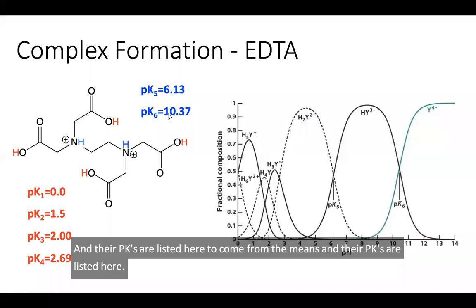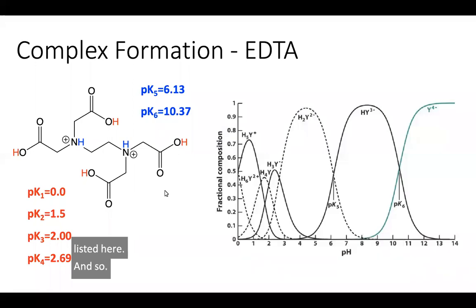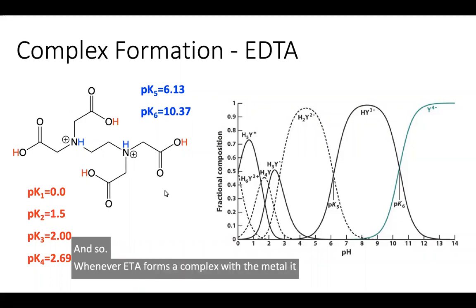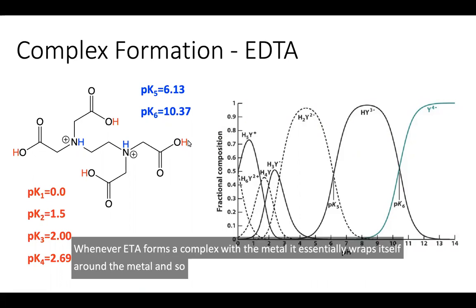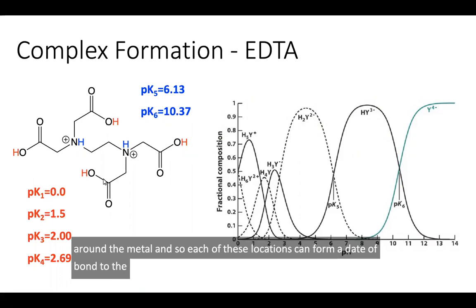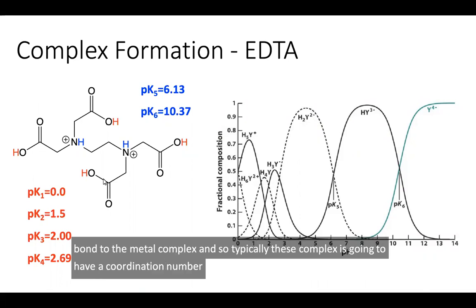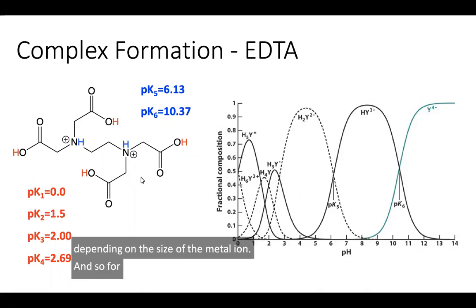Whenever EDTA forms a complex with a metal, it essentially wraps itself around the metal. Each of these locations can form a dative bond to the metal complex. For all of those bonds to form, these hydrogens are all lost through that process.